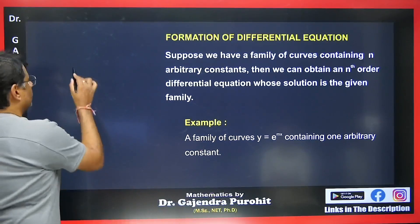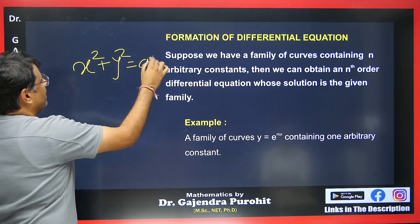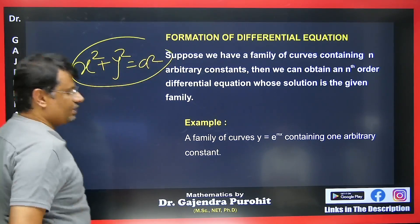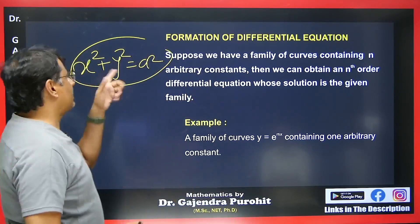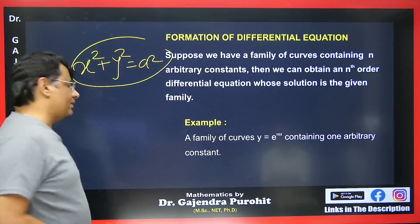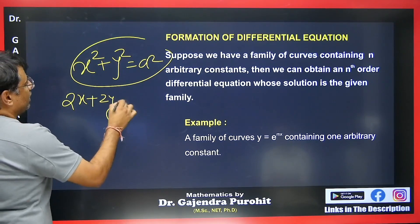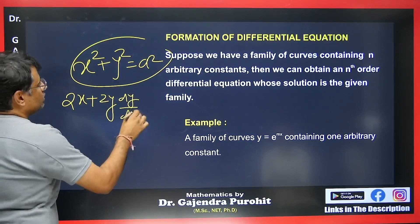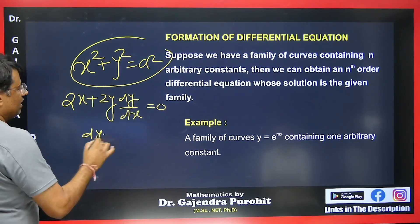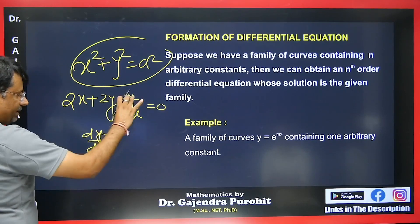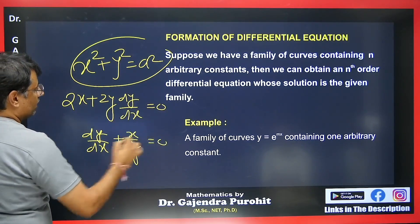Let's take an example. Equation x² + y² = a². This is a circle with one constant. If I want to form its differential equation, I have to eliminate 'a'. So I will differentiate once: 2x + 2y·(dy/dx) = 0. The constant is eliminated. The differential equation we get is dy/dx = −x/y.